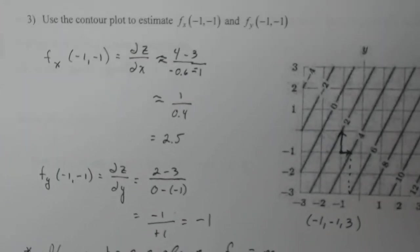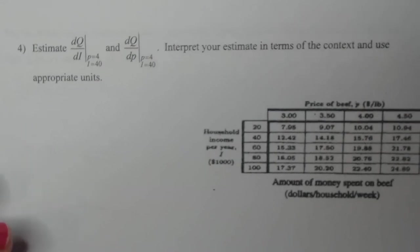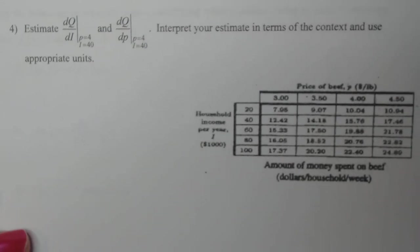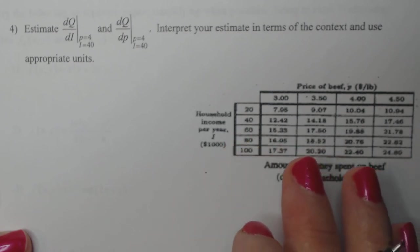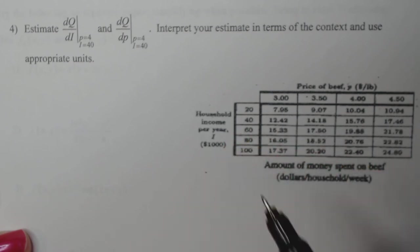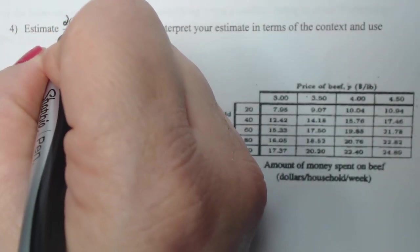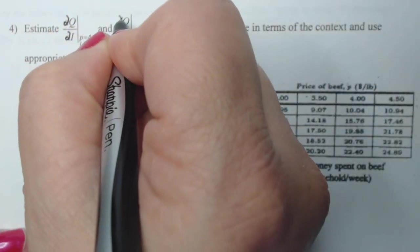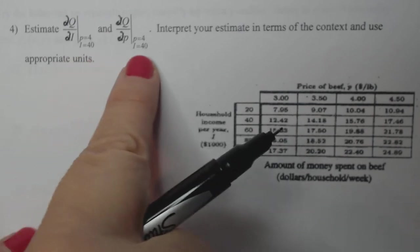All right, if you have any questions, make sure you ask them in class or on the discussion board. Let's go for number four. This is a wildly fun one because it's got so many uses of measure here. You really have to know what you're talking about in order to do this one. So I want to estimate the partial of Q with respect to I and the partial Q with respect to P at this point.